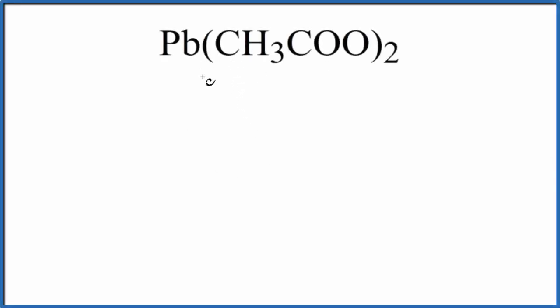In this video, we'll figure out the number of atoms in Pb(CH3COO)2. This is called lead-2, and this is the acetate ion. We have two acetate ions.